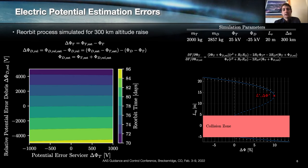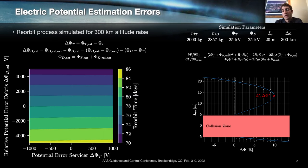First let's look at the electric potential estimation errors. We use two different estimation errors: the first is the error of the estimated servicing satellite potential, which is simply the difference between the estimated potential of the servicer and the true potential of the servicer. For the debris, however, we use the relative potential between the debris and the servicer, because our methods for remotely estimating the potential of nearby objects can only measure the relative potential between the servicing spacecraft and the target object.